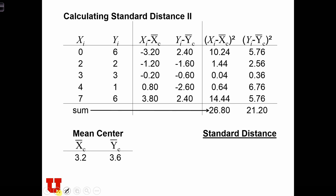But we're just repeating the same process, calculating the sum of the squared deviations, and then putting that into the formula to find a standard distance of 3.2.